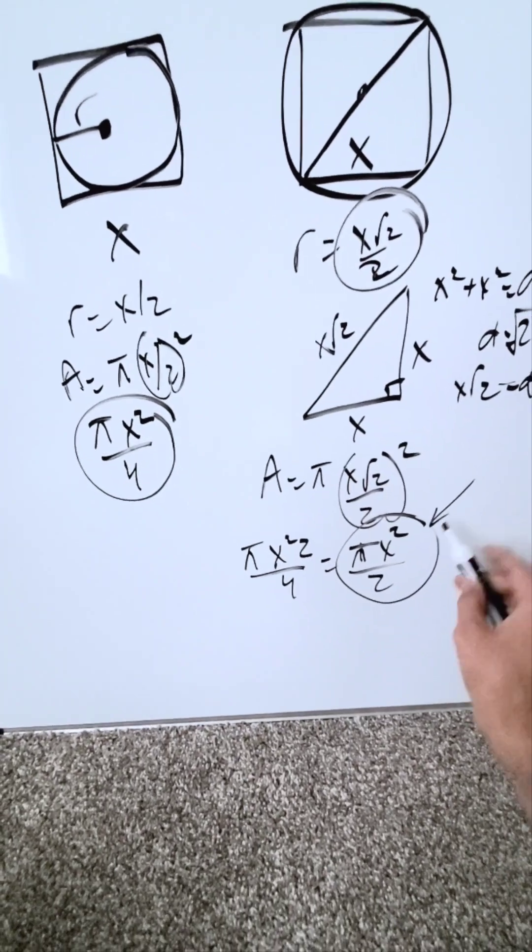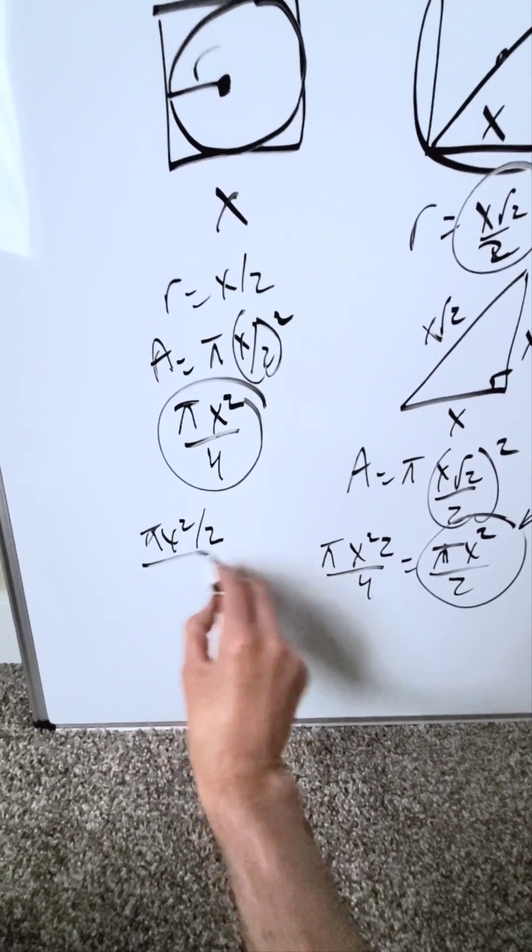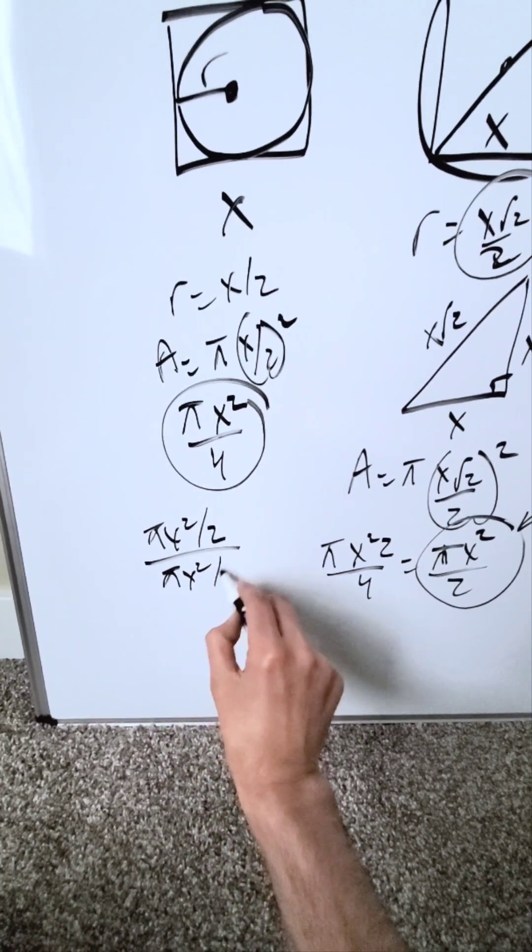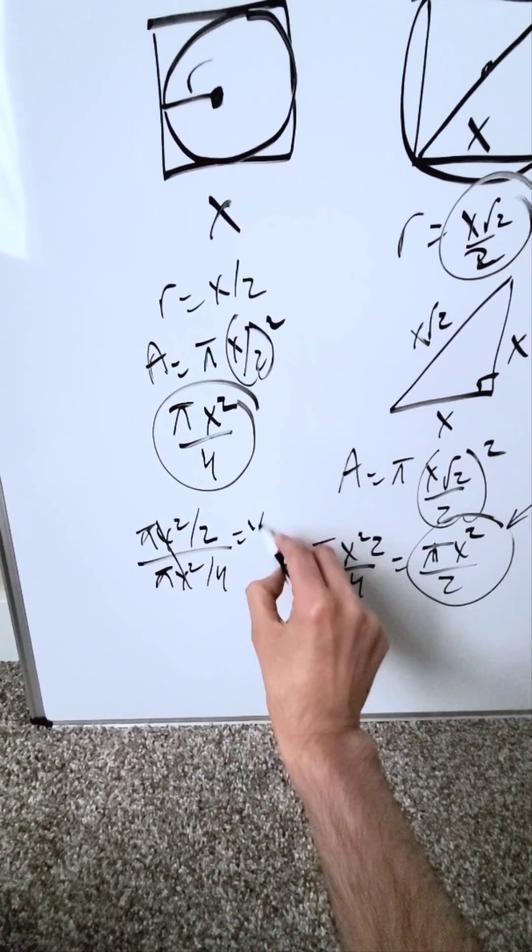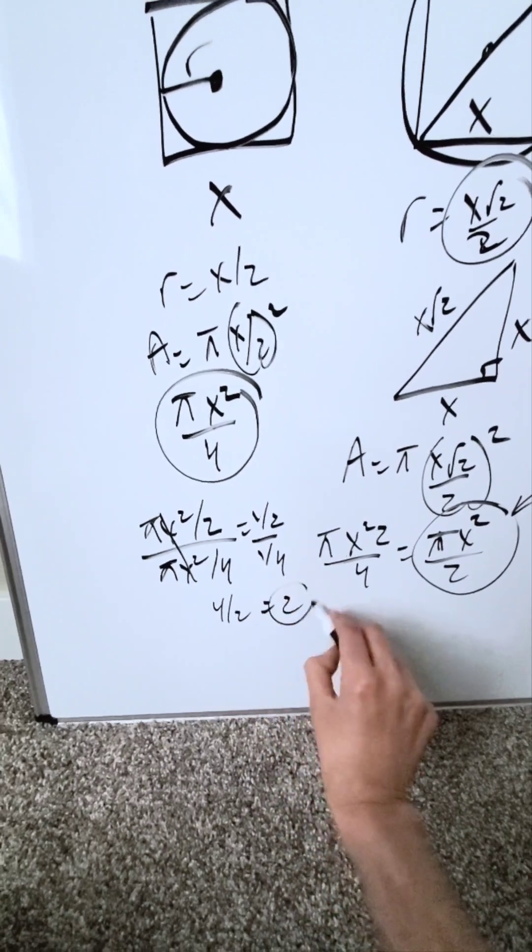Which one of these is larger? Obviously this is, but by how many times? You'll take the large value, πx²/2, and divide it by the smaller value, πx²/4. These cancel out. You'll have 1/2 divided by 1/4. You'll have 4/2, and it'll be 2.